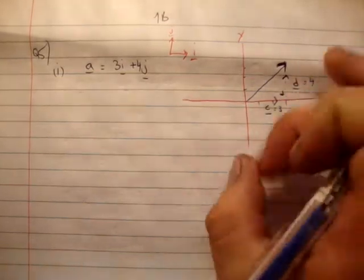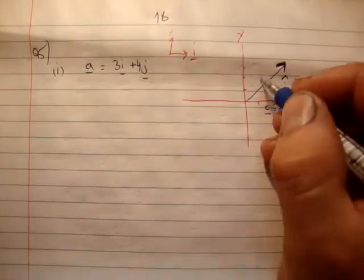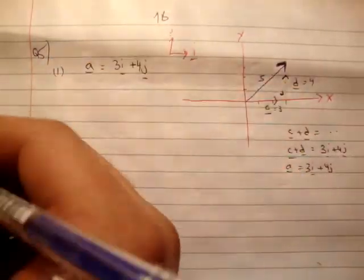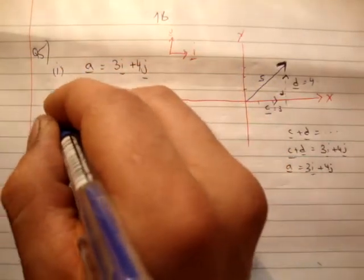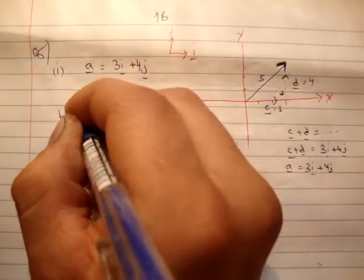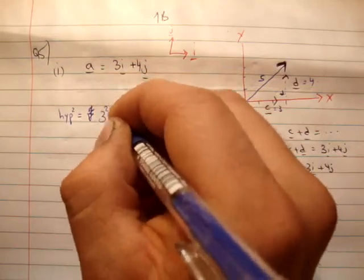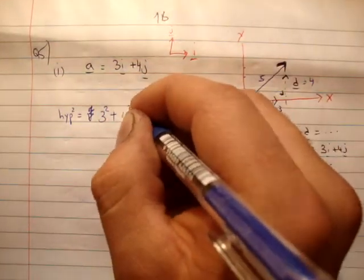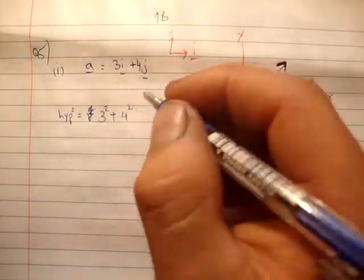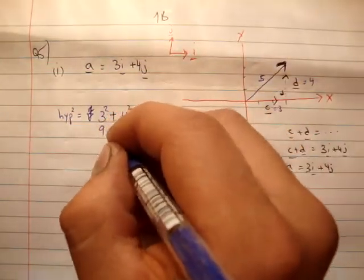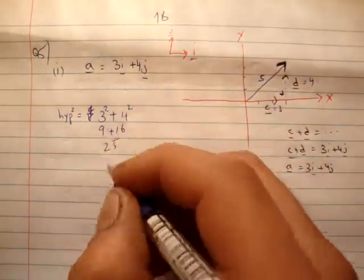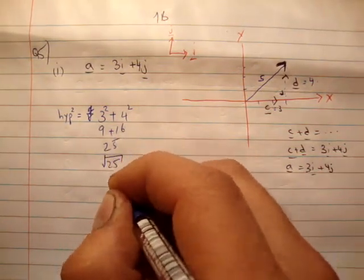Now you can do a bit of Pythagoras here, and you'll find that this is 5, because remember that the hypotenuse squared is equal to 3 squared plus 4 squared, and you get the square root of that. So I'll just do it in here. So you get 9 plus 16, which is 25, and you get the square root of 25, which is 5.